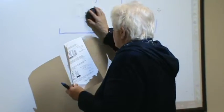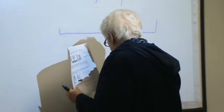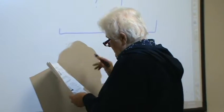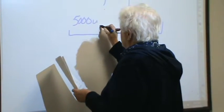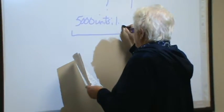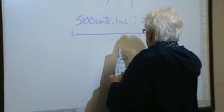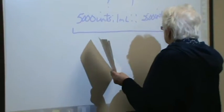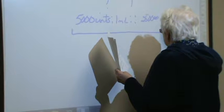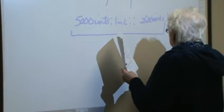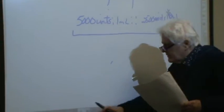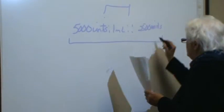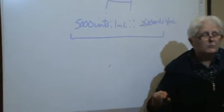Okay, and the only thing I'm going to do here is show you how it sets up. So I already know that it comes as 5,000 units in 1 mil, and the doctor wants 2,500 units in X mil. What did you come out with? It's 0.5 mils.